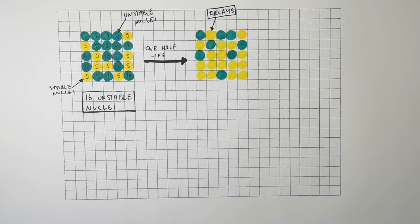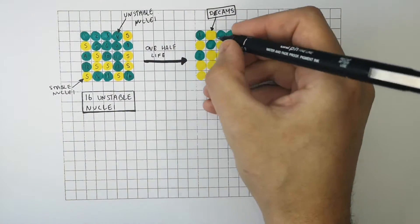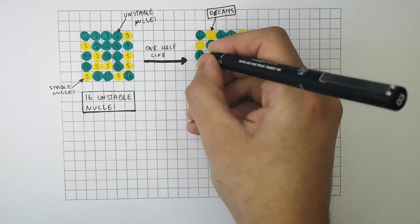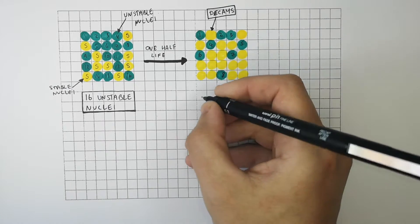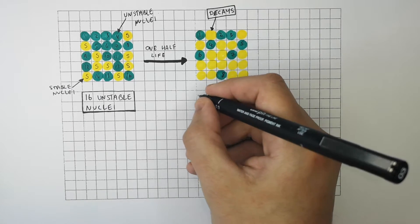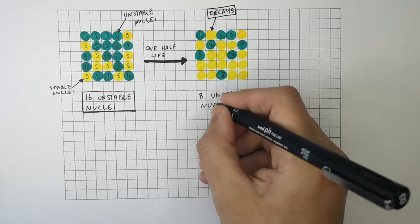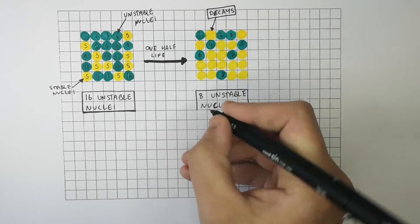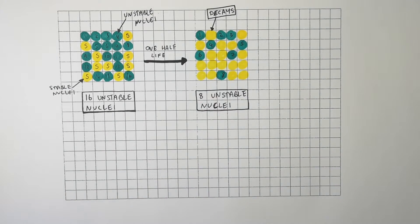As you can see, we went from 16 unstable nuclei to 8 unstable nuclei. This will also lead to a halving of the radioactivity.